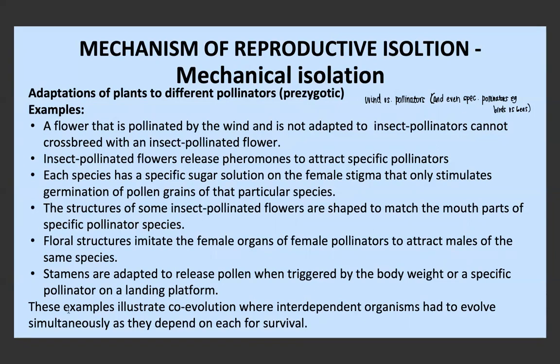The important thing to note is that these examples illustrate co-evolution. Interdependent organisms — that is, organisms that depend on the same resources and live in the same areas — had to evolve simultaneously because they depend on each other for survival. They had to both evolve similar adaptations, but also adaptations that are different, so that something like interbreeding with the wrong species doesn't occur.